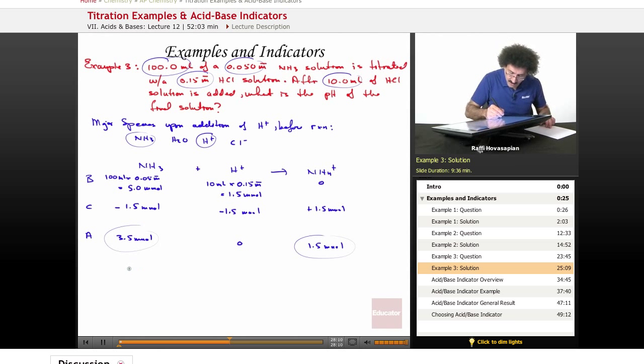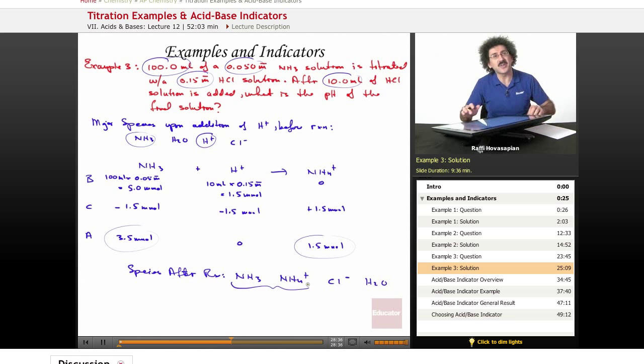So now, species after the reaction. Well, we have NH3, we have NH4+, we have the Cl-, that doesn't do anything, and we have H2O. What's going to dominate the equilibrium? This is going to dominate the equilibrium. Here's where it gets really, really interesting.